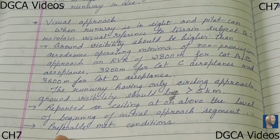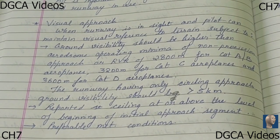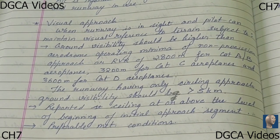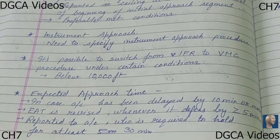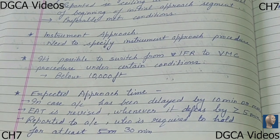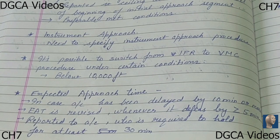The meteorological conditions should be preferable for a visual approach to be carried on. Coming to the instrument approach — this approach is made with the help of instruments. The approach control unit shall specify the instrument approach procedure to be used by the arriving aircraft, and the flight crew may request an alternative procedure. If circumstances permit, they will be cleared for the alternative approach requested.